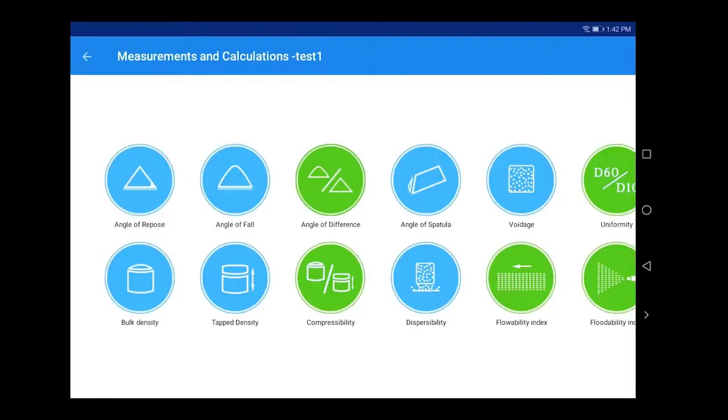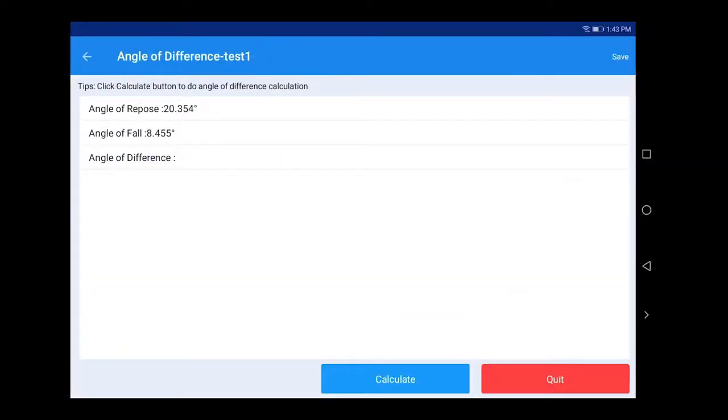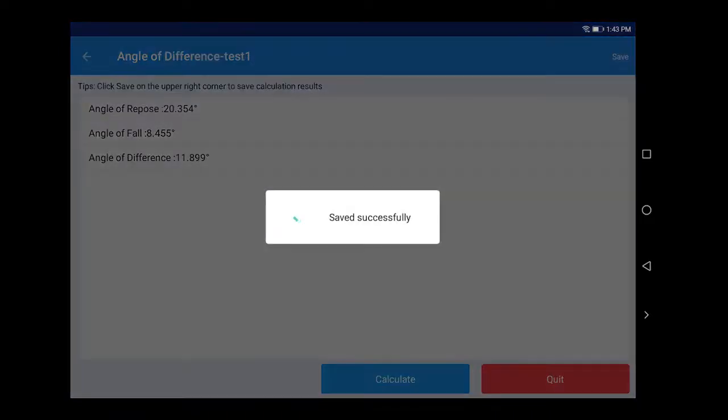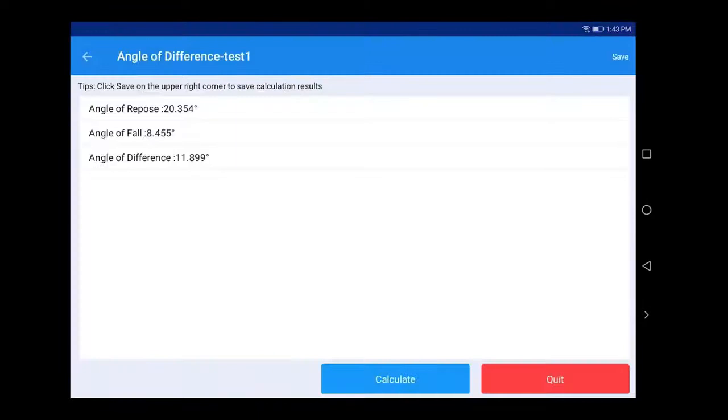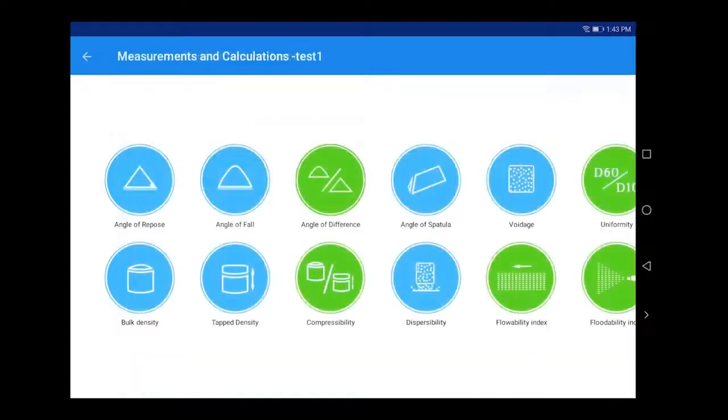For Angle of Difference calculation, click Angle of Difference. The results of angle of repose and angle of fall measured before will appear on the screen. Click Calculate and the system will automatically calculate the angle of difference. Click Save to save the results and click Quit to complete the angle of difference calculation.